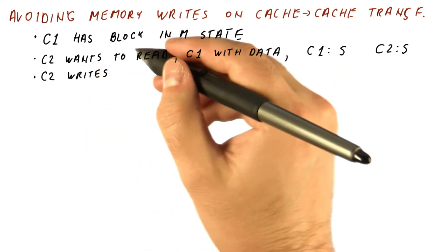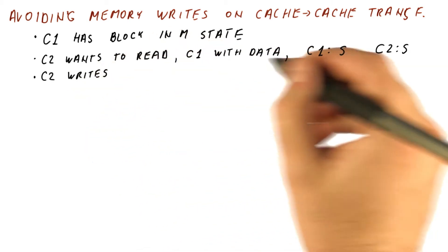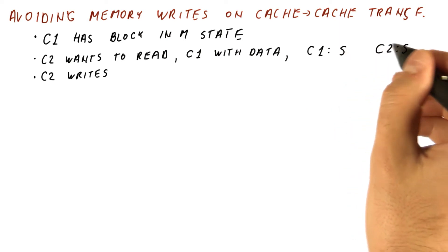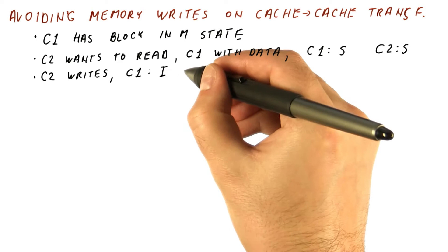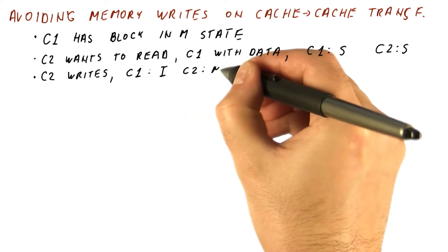Now what can happen is C2 writes, so it sends an invalidation because it already has the data. Now C1 gets invalid state, C2 gets the modified state.